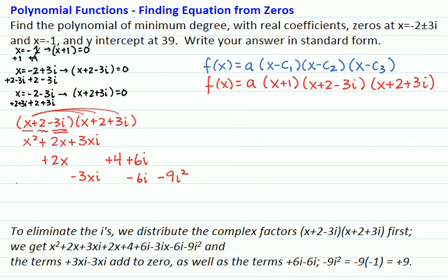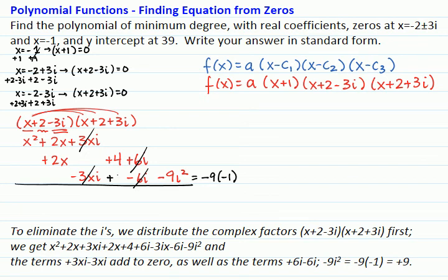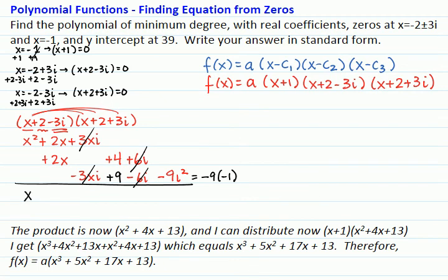Notice that the terms plus 3xi and minus 3xi add to 0, and so do plus 6i minus 6i. In addition, negative 9i squared is negative 9 times negative 1, which is positive 9. And now when I add, I get the product to be x squared plus 4x plus 13.